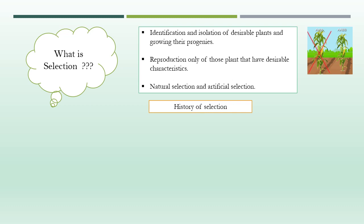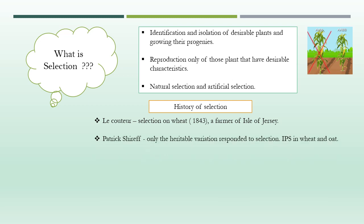History of Selection: Le Couture, a farmer of the Isle of Jersey, published his results on selection in wheat in 1843. He concluded that progenies from single plants were more uniform than the remaining population, and that different progenies were of different agricultural value. About the same time, a Scotsman named Patrick Shereff practiced individual plant selection in wheat and oats and developed some valuable varieties. He concluded that only variation of heritable nature responded to selection, and that this variation arose through natural sports, mutation, and natural hybridization.